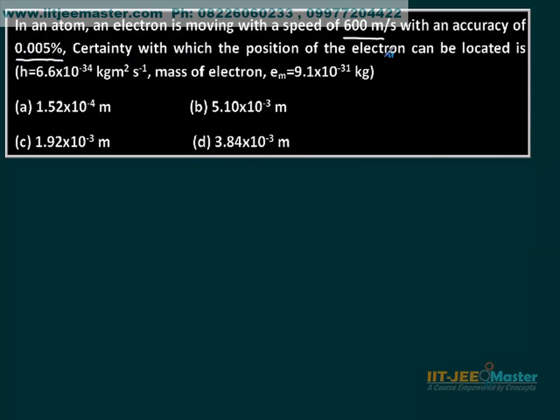The certainty with which the position of the electron can be located is given by the uncertainty principle. According to the uncertainty principle, delta x times delta p should be greater than or equal to h upon 4 pi.